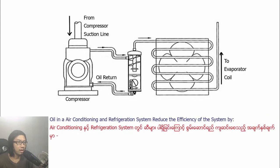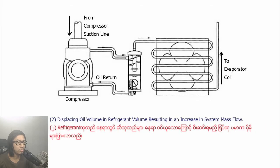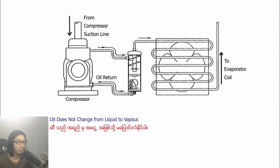Oil in the air conditioning and refrigeration system reduces the efficiency of the system by: 1. Reduction in heat transfer due to oil coating of the condenser and evaporator. 2. Displacing oil volume and refrigerant volume, resulting in an increase in system mass flow. Oil does not change from liquid to vapor.